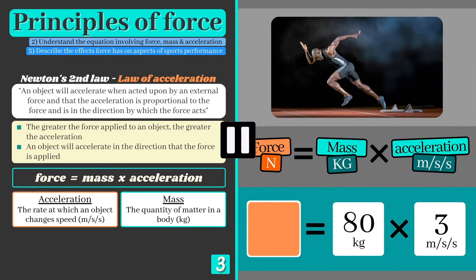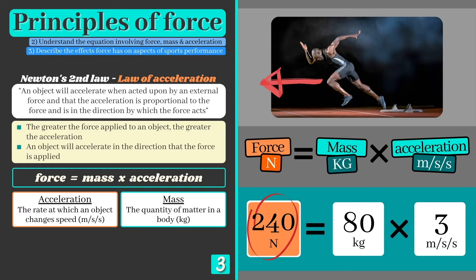Why not pause the video now to calculate the force applied by the sprinter as they accelerate out of the starting blocks, and remember to state the correct units to avoid dropping a mark. So in this example, the sprinter has a mass of 80 kilograms and accelerates out of the blocks at a rate of 3 meters per second squared. We can multiply these values to discover that their muscles must have applied a force of 240 newtons.